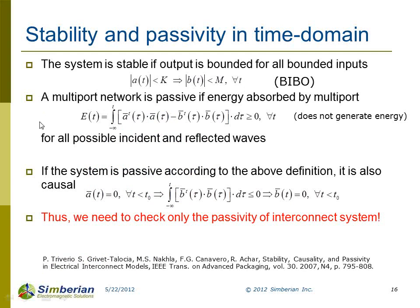Speaking of causality, we immediately have to bring passivity into the picture — they are very related subjects. The system is passive if incident wave power minus power of reflected wave is always greater than or equal to zero — it doesn't generate power. If the system is passive according to this definition, then it is also causal. Technically, we need to check only passivity of an interconnect system.